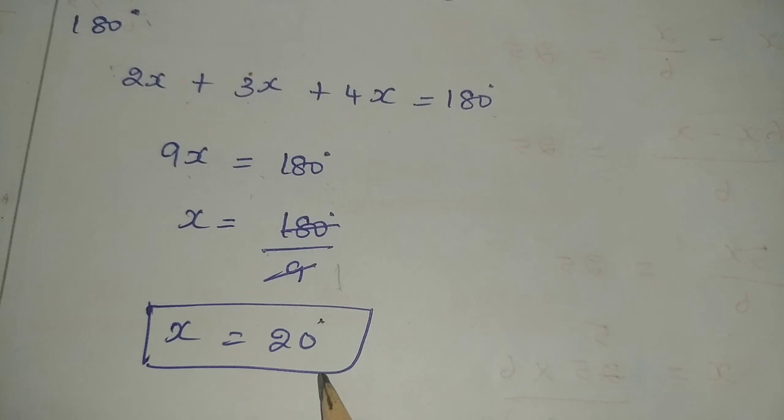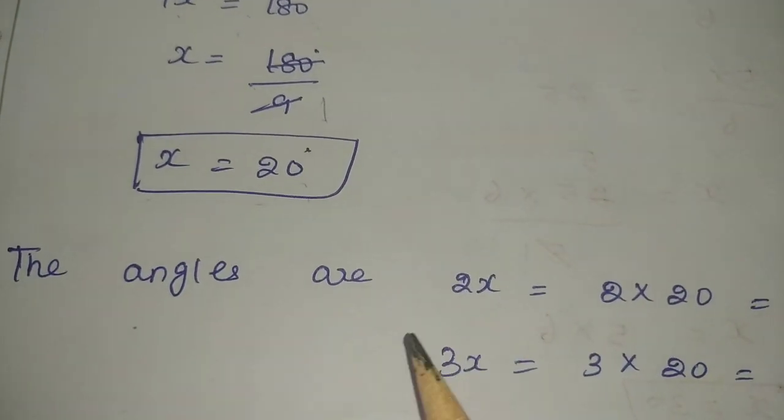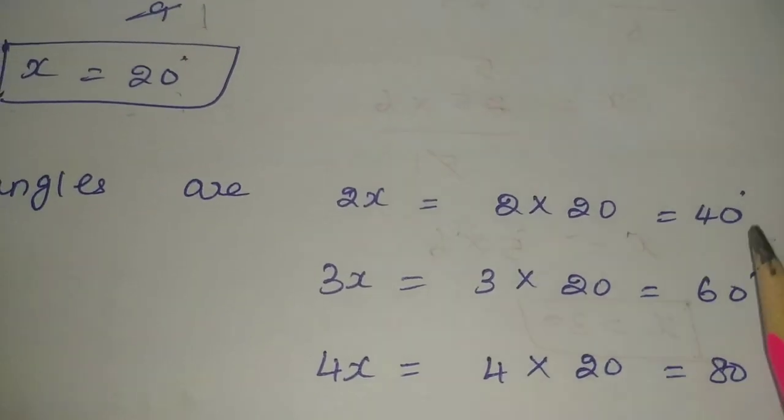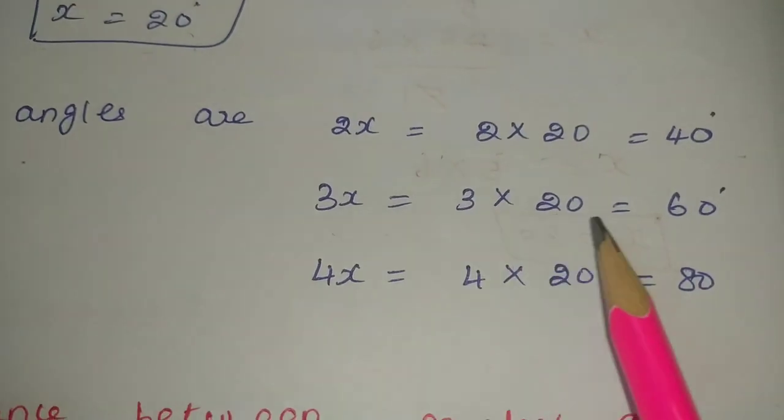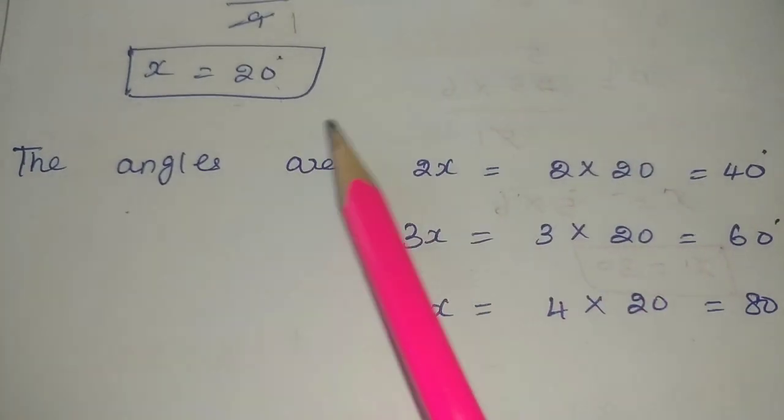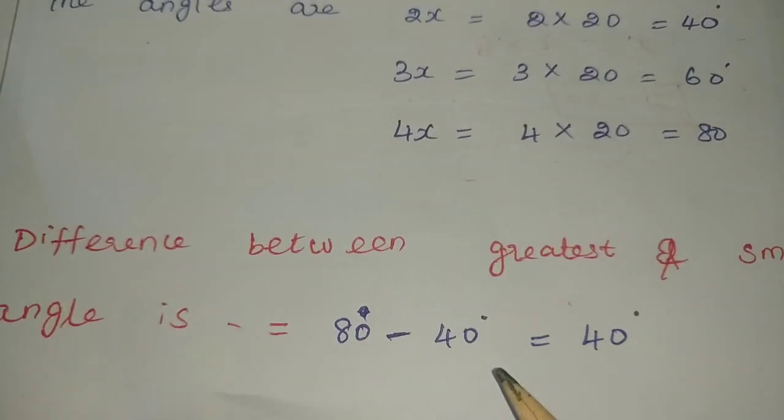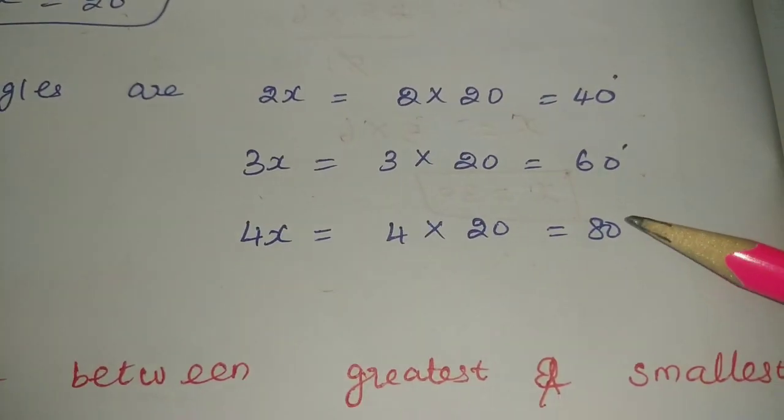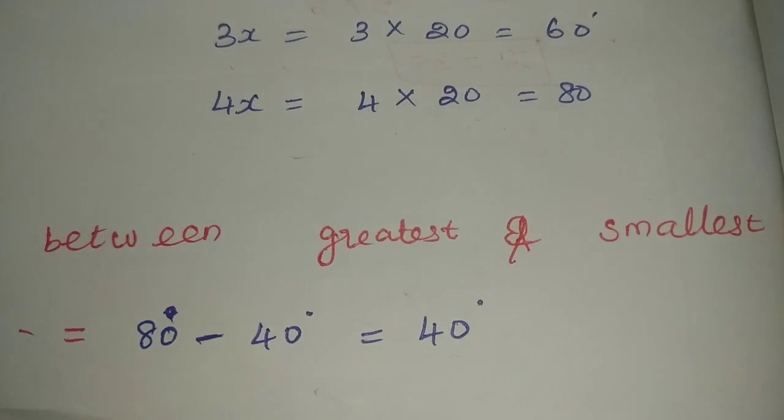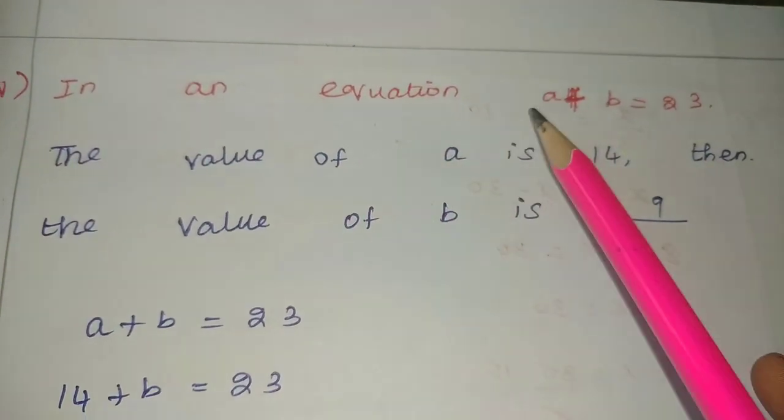The angle 2x equals 2 into 20, which is 40 degrees. Next, 3x equals 3 into 20, which is 60 degrees. 4x equals 4 into 20, which is 80 degrees. The difference between the greatest and smallest number: the greatest is 80, smallest is 40, so 80 minus 40 equals 40 degrees.